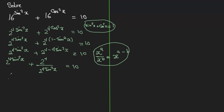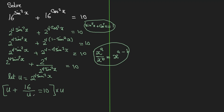Now I'm going to let u equal 2 to the power of 4 sin squared x. So therefore, this becomes u plus 2 to the power of 4 — which is just 16 — over u equals 10. I'm going to multiply everything by u to eliminate the denominator, giving us u squared plus 16 equals 10u.